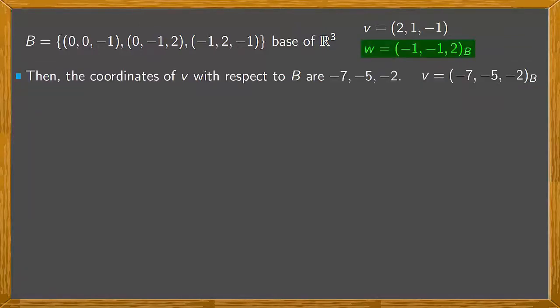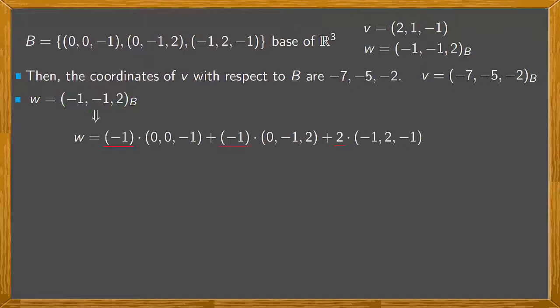Now let's move on to W. We have that the coordinates of W with respect to basis B are (-1,-1,2). So when expressing W as a linear combination of B, these are the coefficients.